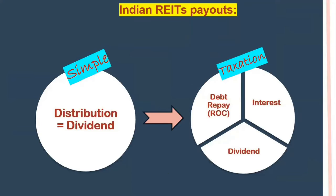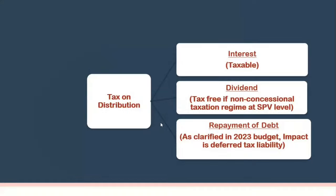The takeaway is simply that Indian REITs give payouts where all distributions effectively equal dividends. For taxation purposes, it is split into repayment of debt, interest, and dividend, and taxes are calculated accordingly. Interest is taxable; dividend is tax-free if the non-concessional taxation regime applies at the SPV level; and repayment of debt, as clarified in the 2023 budget, has limited impact as it is a deferred tax liability. For detailed understanding, consult your tax advisor and refer to the FAQs on the PG INVIT website.